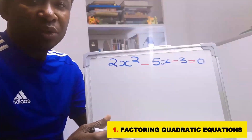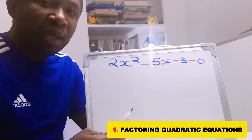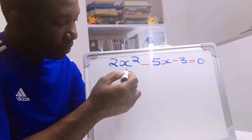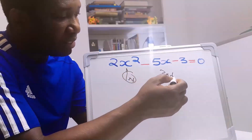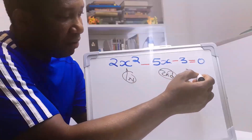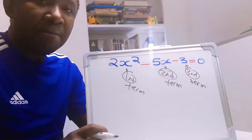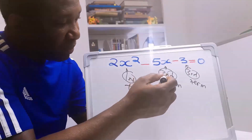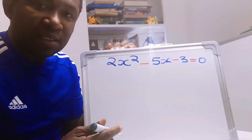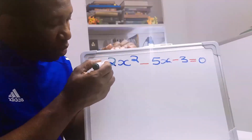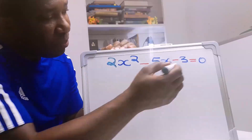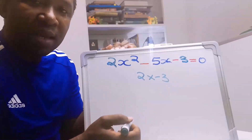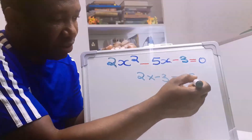The factor method of solving a quadratic equation requires four terms. We have the first term, the second term, and the third term. To effectively apply the factor method, we are going to split this middle term into two. To achieve this, we use the coefficient of x squared, which is 2, to multiply the constant, which is minus 3. Two multiplied by minus 3 is minus 6.